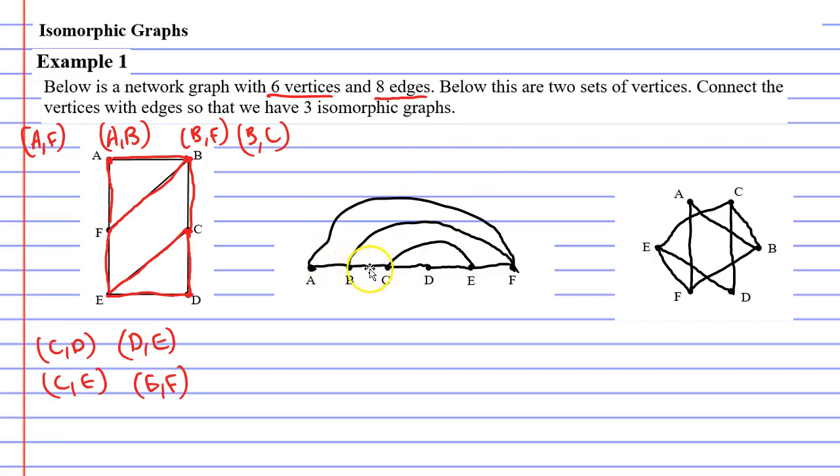We have one, two, three, four, five, six, seven, eight on the one in the middle and for the one on the right we have one, two, three, four, five, six, seven, eight. Excellent.